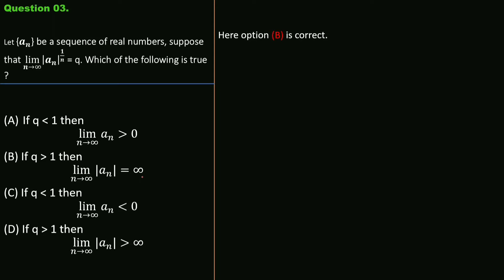We use Cauchy's root test: if Σuₙ is a positive term series such that lim(n→∞) uₙ^(1/n) = l, then the series converges if l < 1, diverges if l > 1, and the test fails if l = 1.